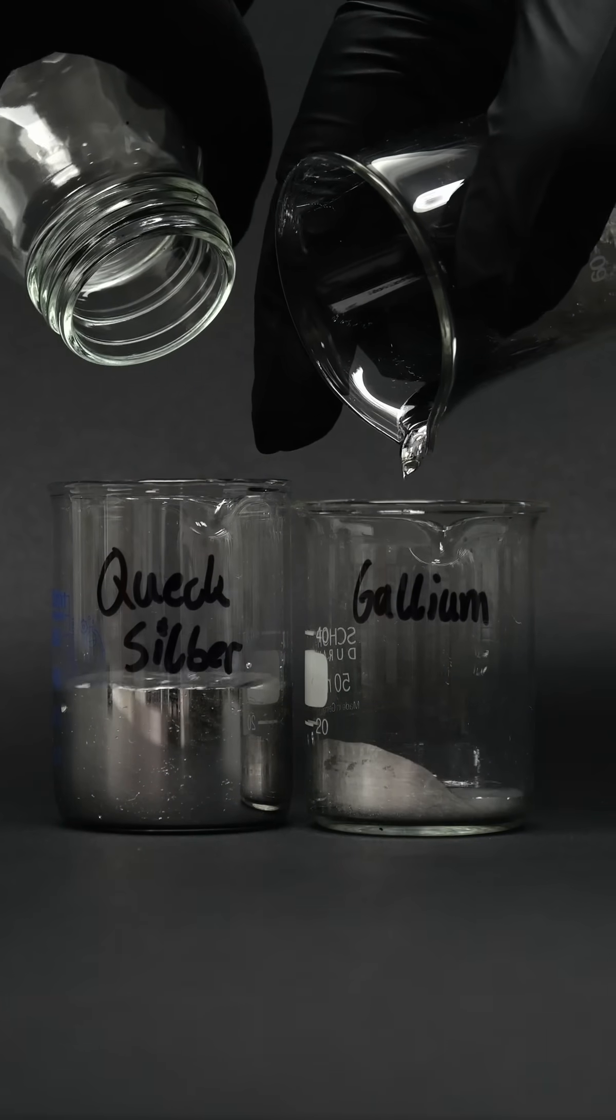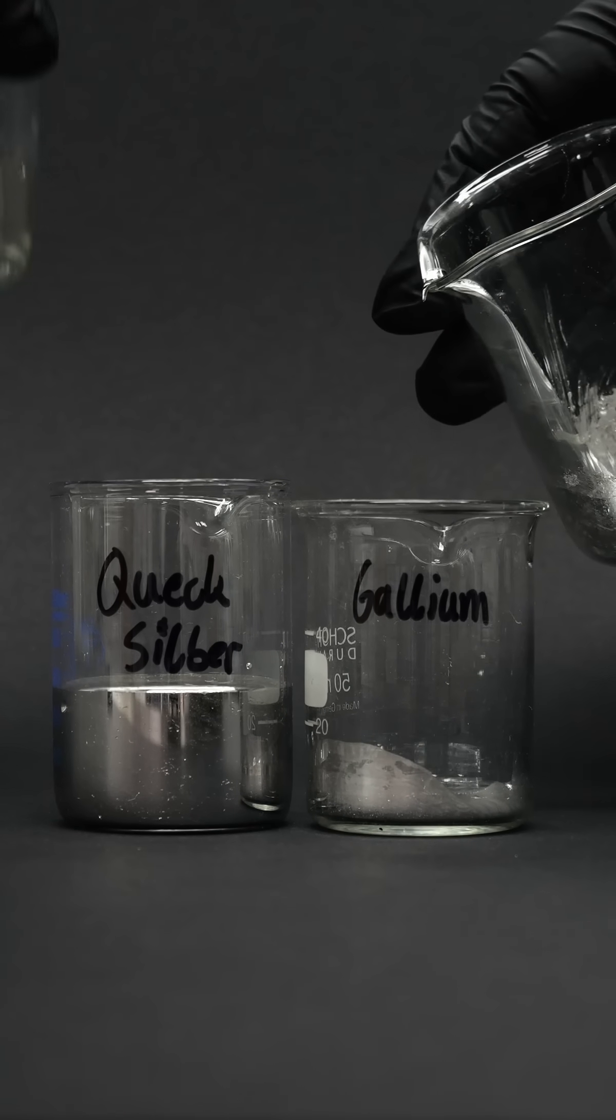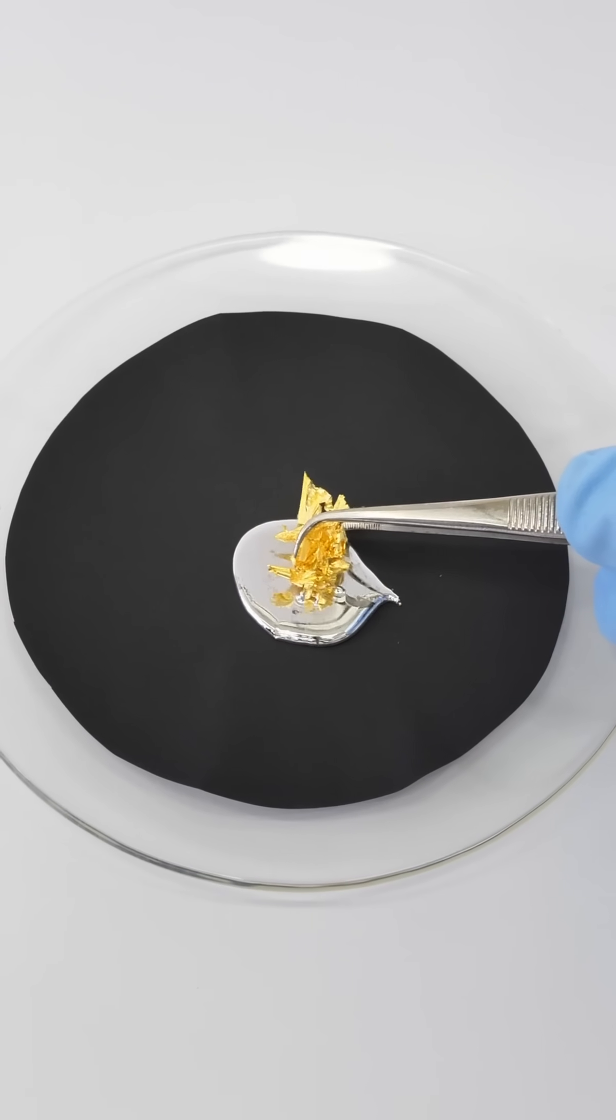Today I'm going to mix liquid mercury and liquid gallium together. Both of these metals possess the unique ability to form compounds with other metals.